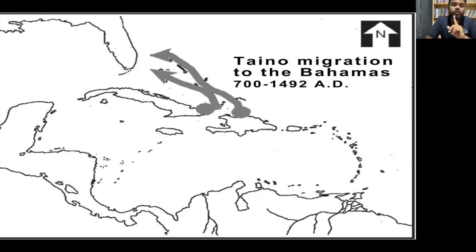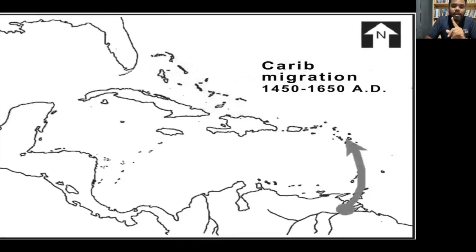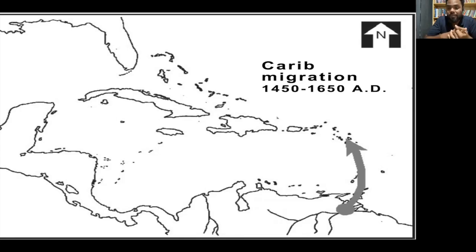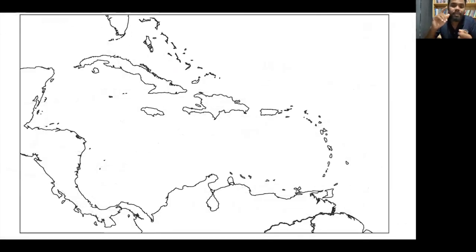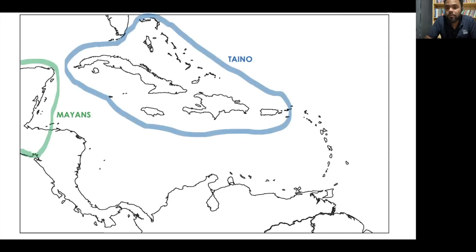There was one final indigenous migration movement in the Caribbean — the Kalinago migration, also popularly known as the Carib migration, which occurred over a span of 200 years, ending in 1650. The Kalinago people occupied most of the Lesser Antilles. So by the year 1492, when the Spanish arrived in the Caribbean region, there were three major people groups living there: the Mayans, the Taino (also known as the Arawaks), and the Kalinago (also known as the Caribs).